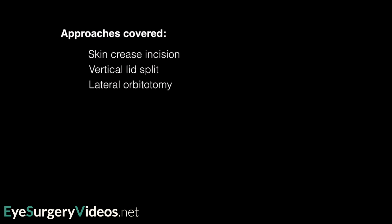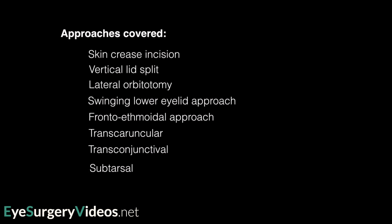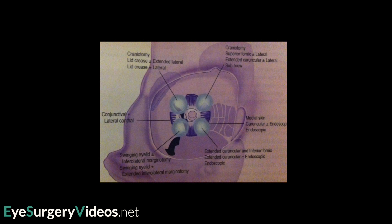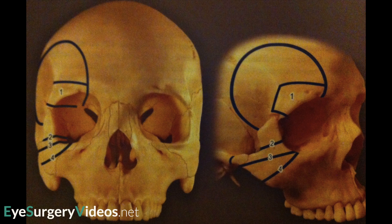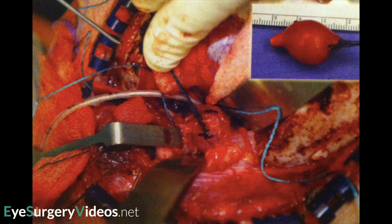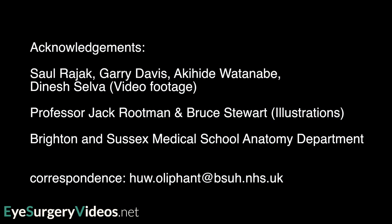Throughout this video we have been able to cover multiple approaches to the orbit, including skin crease incision, vertical lid split, lateral orbitotomy, the swinging lower eyelid approach, frontoethmoidal approach, transcaruncular and transconjunctival approaches, subtarsal and subciliary approaches, as well as briefly the endoscopic approach. It is important to be aware that occasionally, due to a lesion being too posterior or bridging both intraorbital and intracranial spaces, a combined approach with neurosurgical colleagues may also be required. We hope you have found this video to be informative and many thanks for watching.